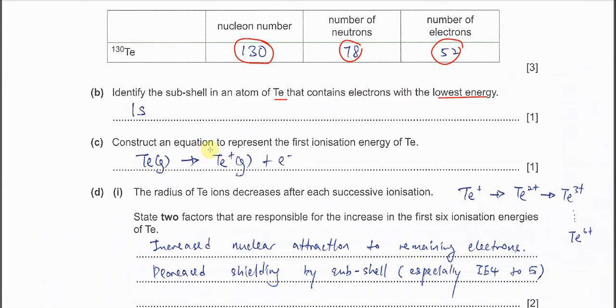Construct an equation to present the first IE of Te. Okay, this one you must include the state symbol. So it must be the gaseous atom to form gaseous ion. And one mole of gaseous atom form one mole of gaseous ion, remove one mole of electrons. So this one is the equation, right, for the first IE.